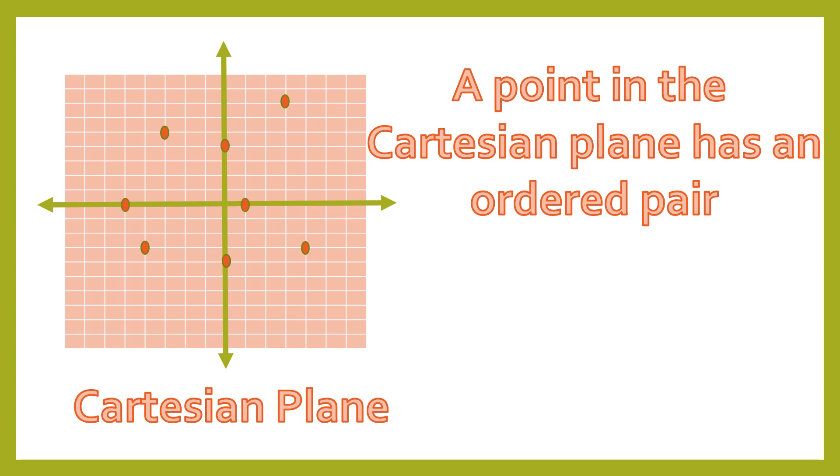A point in the Cartesian plane has an ordered pair, 1, 4. So your 1 represents the values of x, and then 4 represents the values of y.